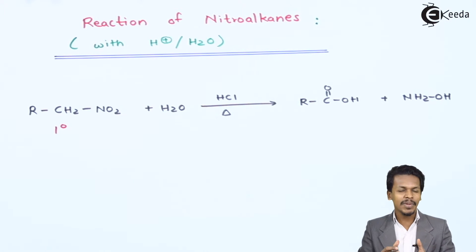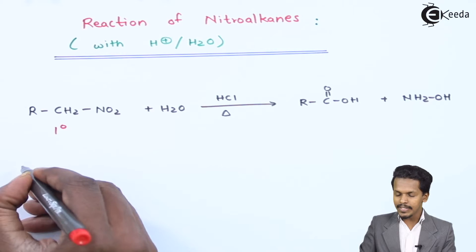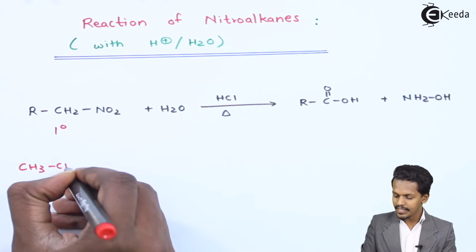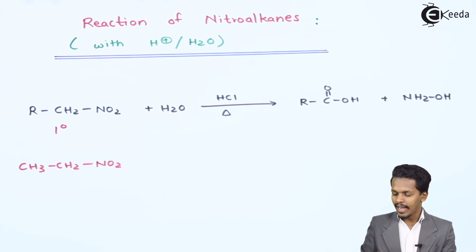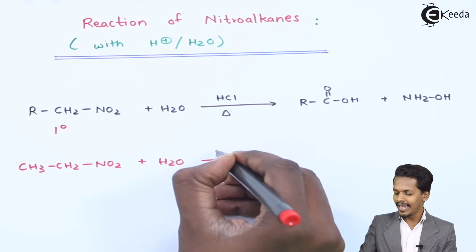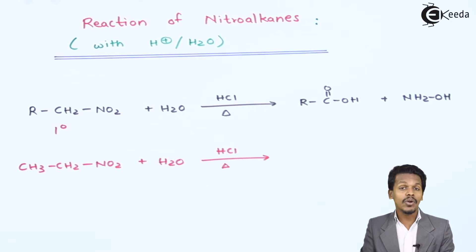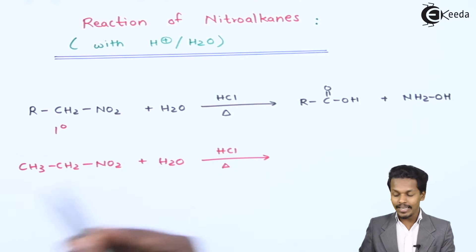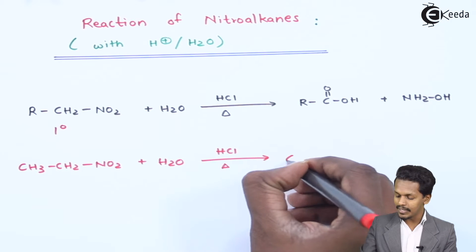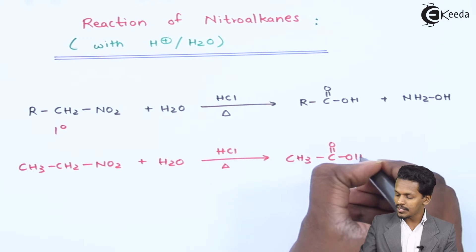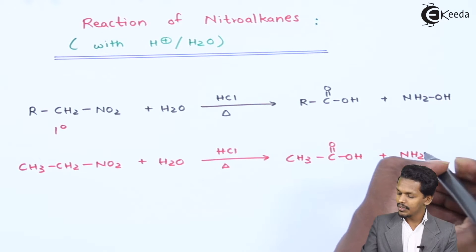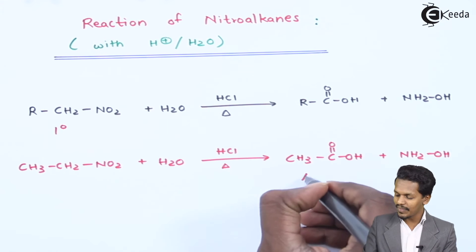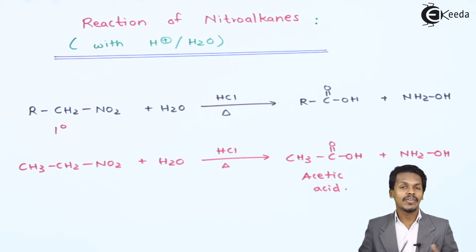For example, if I consider nitroethane, that is CH3CH2NO2, and react it with water in presence of HCl or H2SO4, the reaction proceeds to give a carboxylic acid. The product we get is CH3C(=O)OH plus NH2OH. So this is nothing but acetic acid. That was the reaction of primary nitroalkane undergoing hydrolysis.